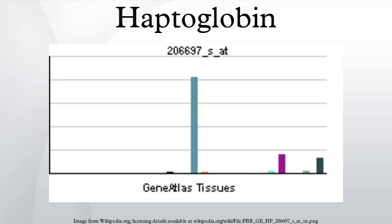Conversely, in extravascular hemolysis the reticuloendothelial system, especially splenic monocytes, phagocytizes the erythrocytes and hemoglobin is not released into circulation. Serum haptoglobin levels are therefore normal.